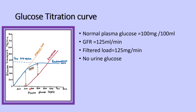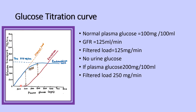At normal plasma glucose, glucose does not appear in the urine. When the plasma glucose is 200 mg per 100 ml or 200 mg per deciliter, the filtered load is 250 mg per minute. This is the renal threshold point for glucose.